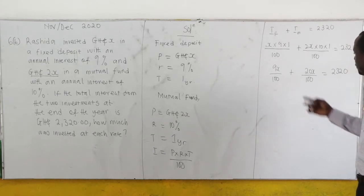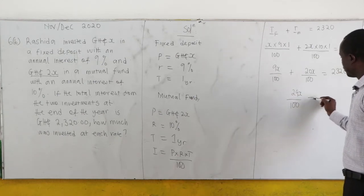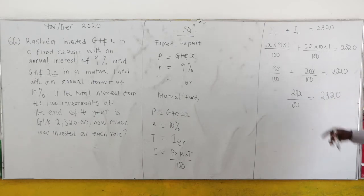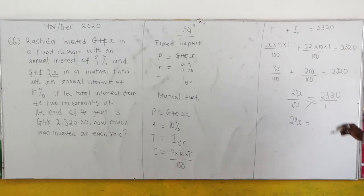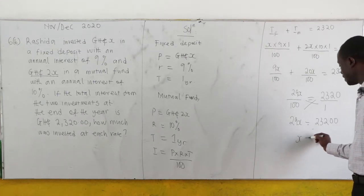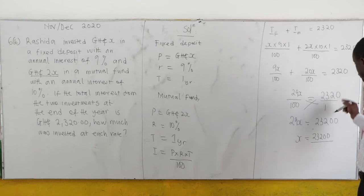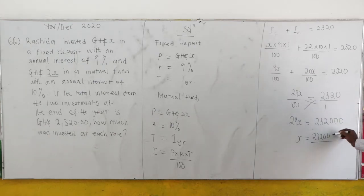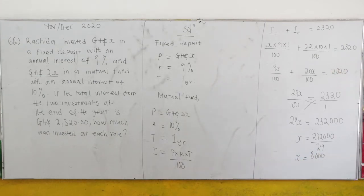The denominators are the same, so we add the numerators: 9x plus 20x equals 29x. So 29x/100 equals 2320. Cross multiplying gives us 29x equals 232,000. We divide both sides by 29, so x equals 232,000 over 29, which gives us x equals 8000.